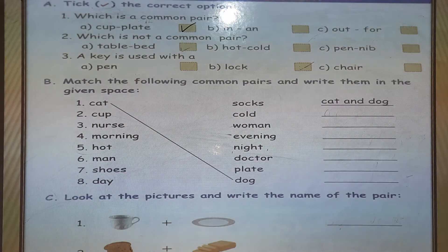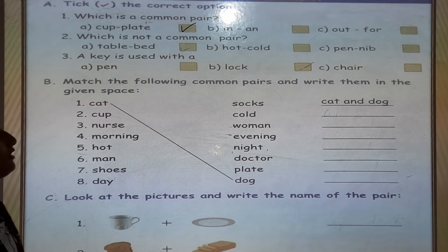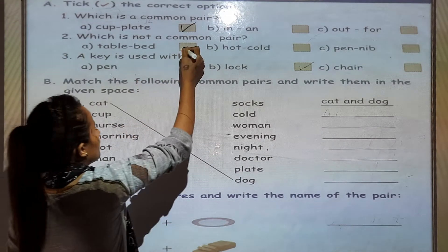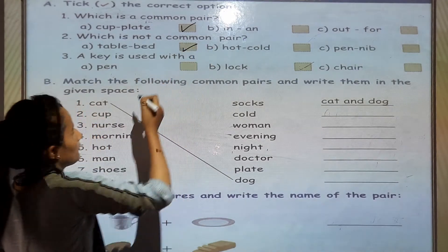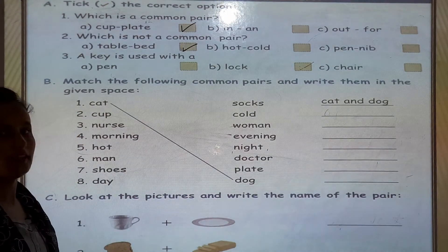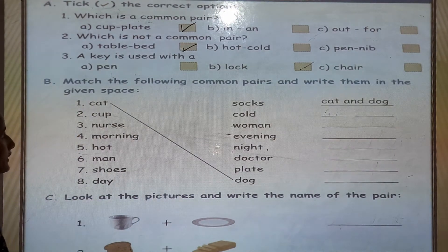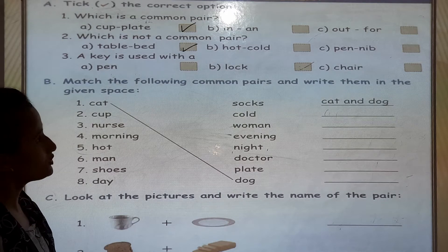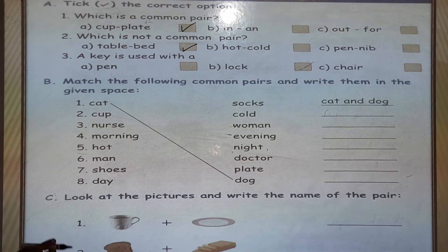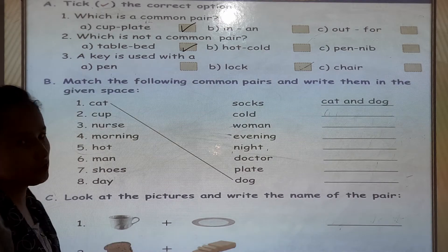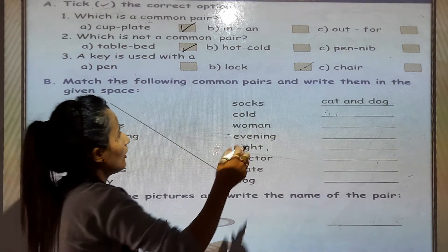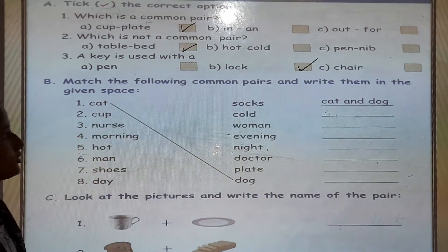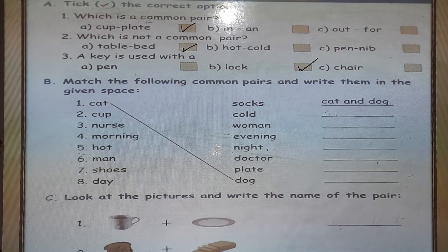Which is not a common pair? The options are: table and bed, hot and cold, or pen and neat. Table and bed is not a common pair, because table and chair is a common pair. A key is used with a lock — when we are going to lock anything, we use a key.